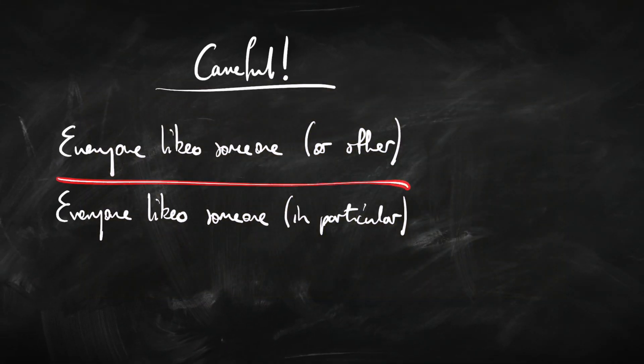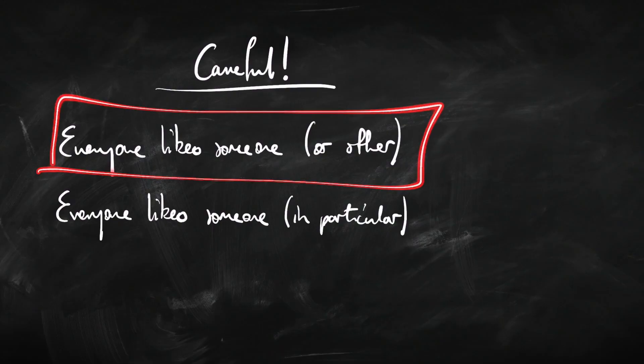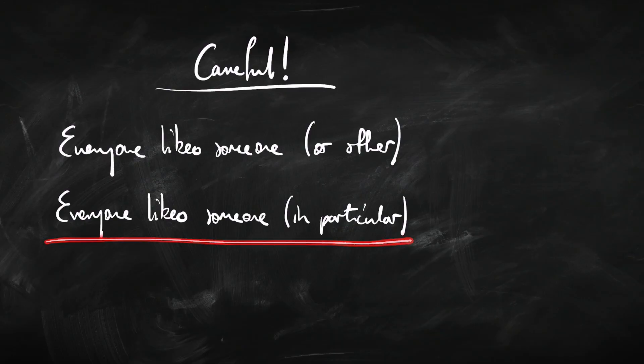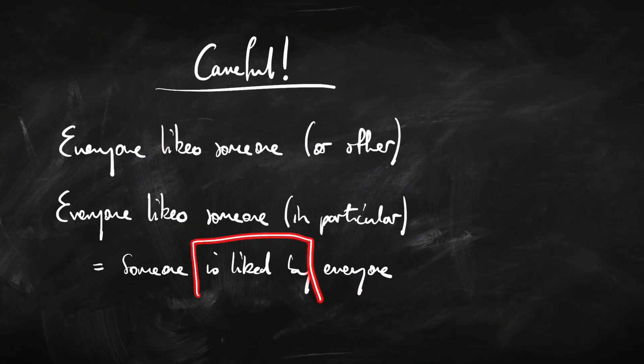Here's something to be careful about: these two English sentences look very similar but mean something different. 'Everyone likes someone or other' versus 'everyone likes somebody in particular.' The first is easy to satisfy — I like one person, you like a different person, and so on. The second requires some incredibly well-liked person — like AOC or David Attenborough — where there's a particular person everyone likes. A clearer way to express the second is: 'Someone is liked by everyone,' reversing the quantifier order and changing from active to passive voice.